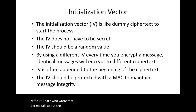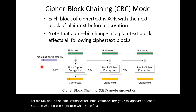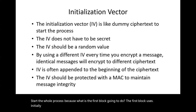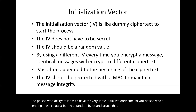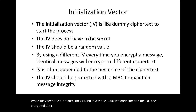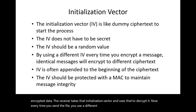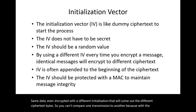An initialization vector (IV) starts the whole process, since the first block has no previous ciphertext. It's just a bunch of random bytes you use to start. The person decrypting needs the same initialization vector, so the sender creates random bytes and attaches them to the file — usually at the beginning. Every time you send the file, you use a different initialization vector, so the same data encrypted twice will produce different ciphertext bytes, preventing comparison of transmissions. The IV doesn't have to be kept secret.